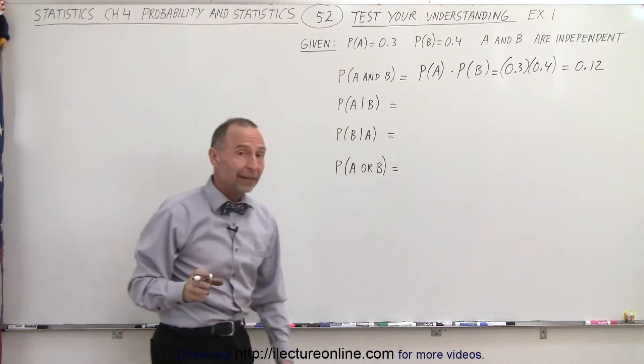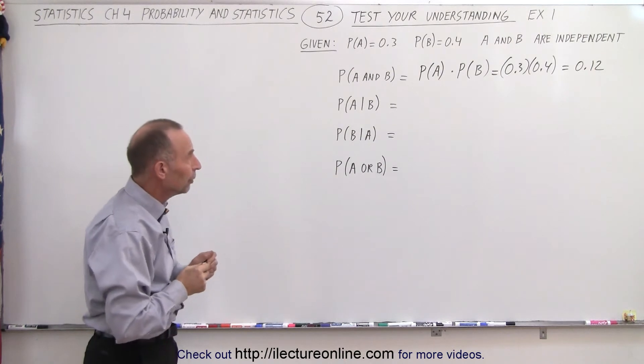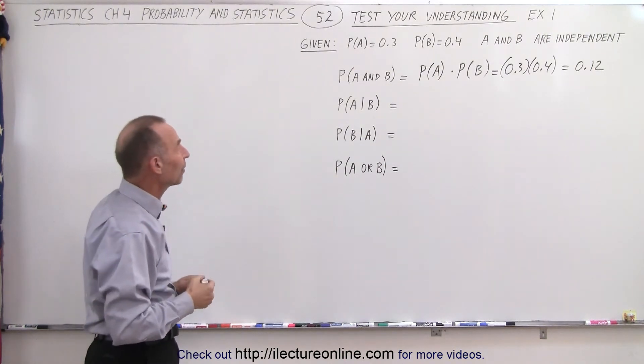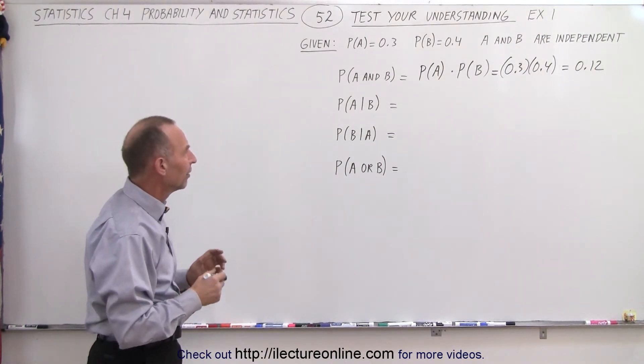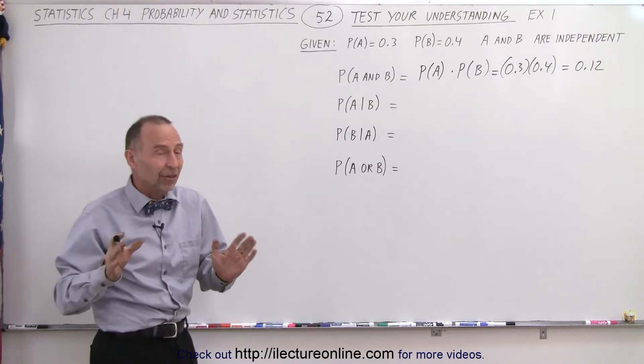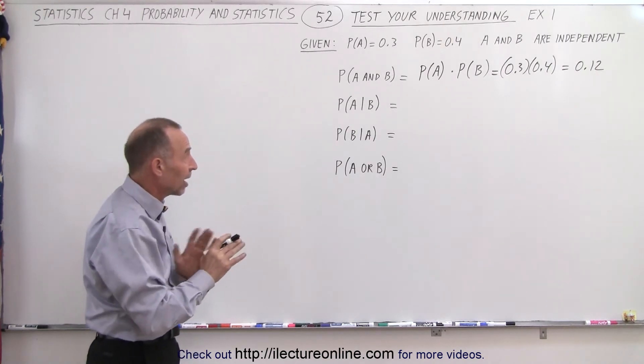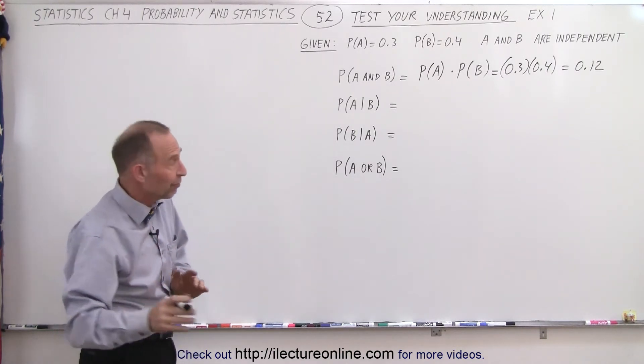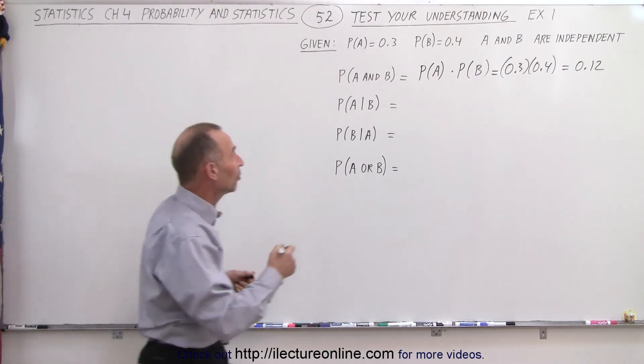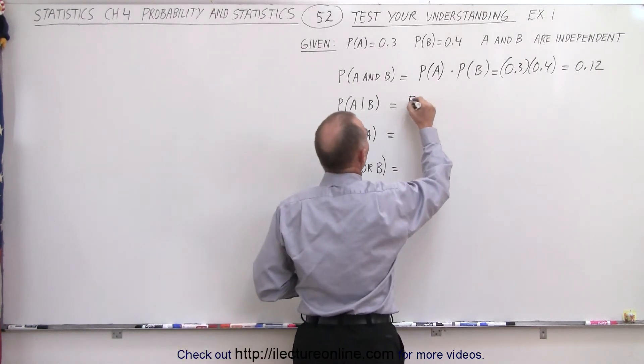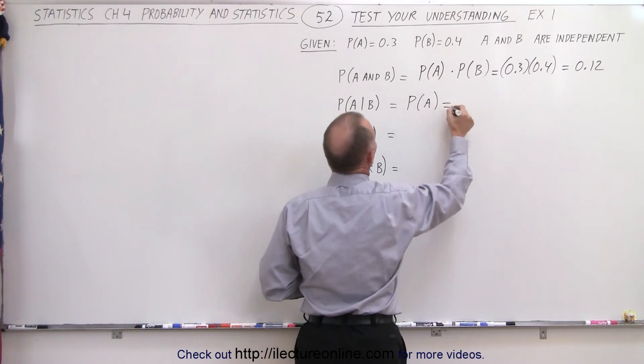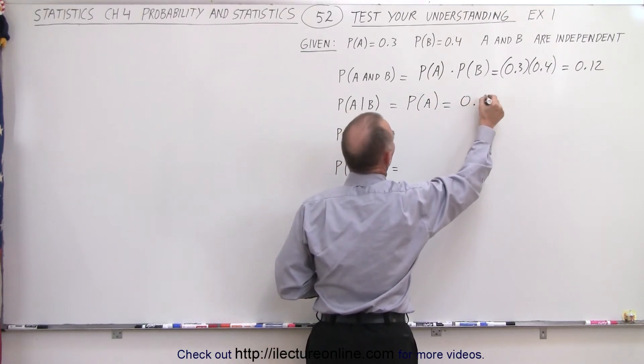Now the probability that event A will occur given that B has already occurred—well, since they are independent events, the outcome of A does not affect the outcome of B, nor does the outcome of B affect the outcome of A. Therefore, this must equal the probability of A, which is 0.3.